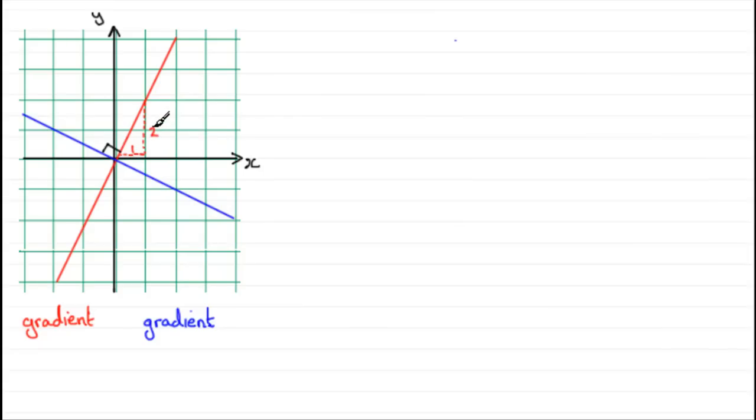So the gradient of this red line is going to be the rise, two, divided by the one unit across in that direction. Two divided by one, which I know is two, but I'm going to purposely leave it like this.